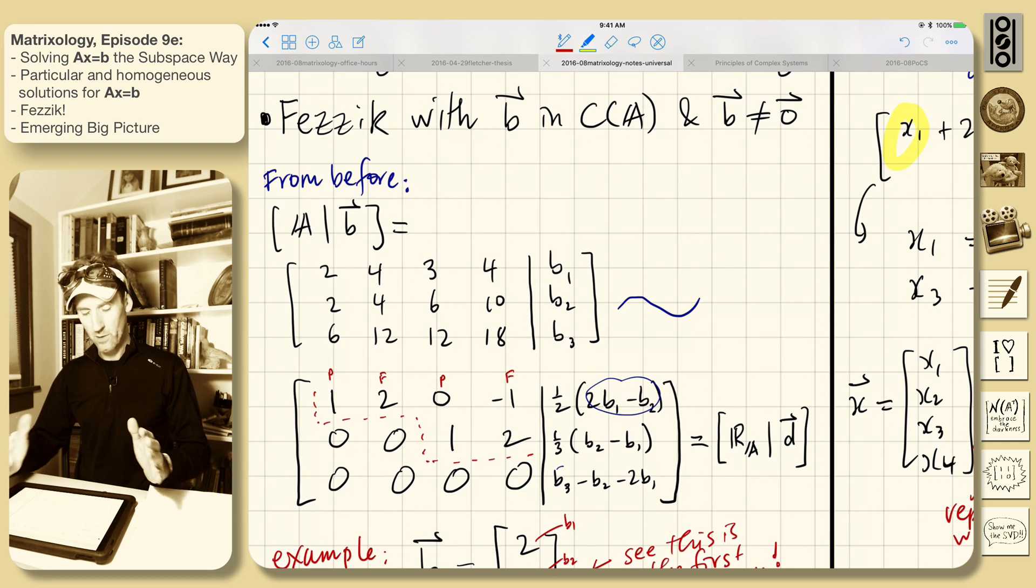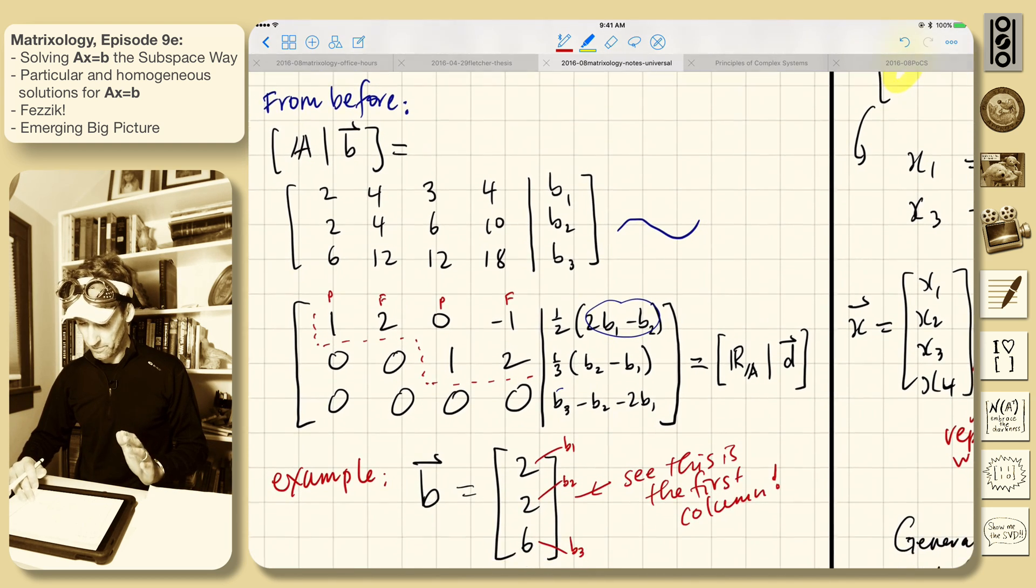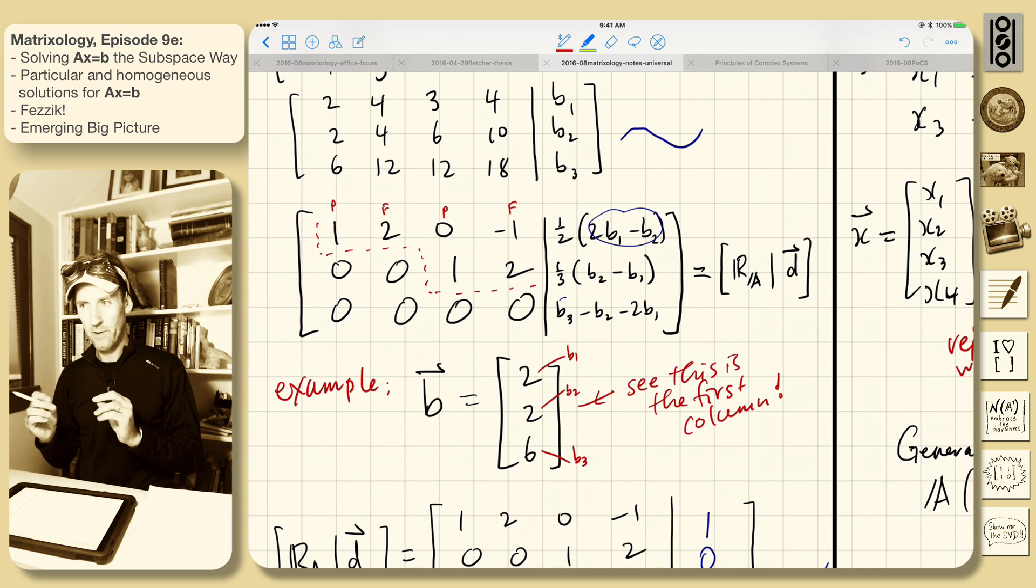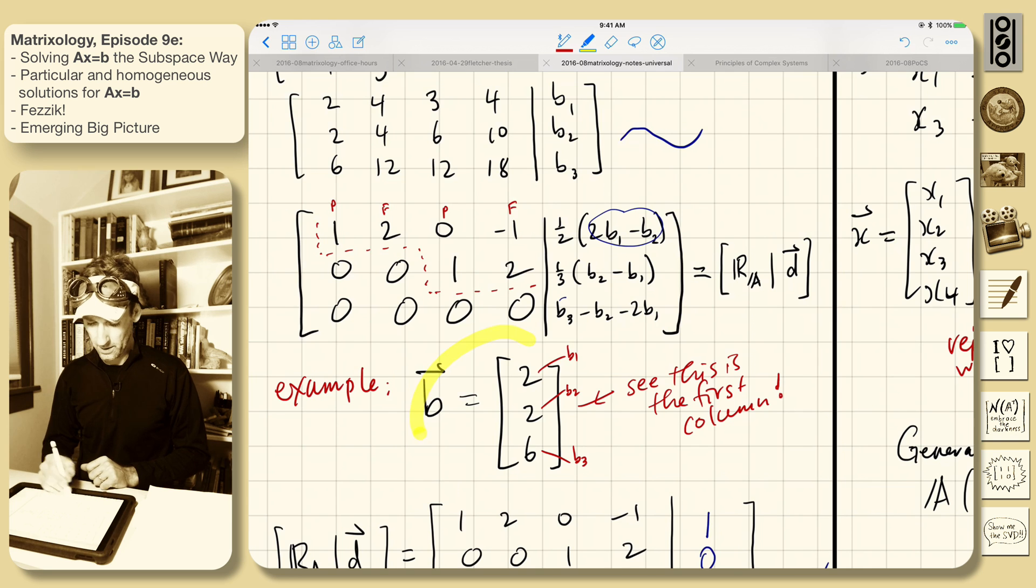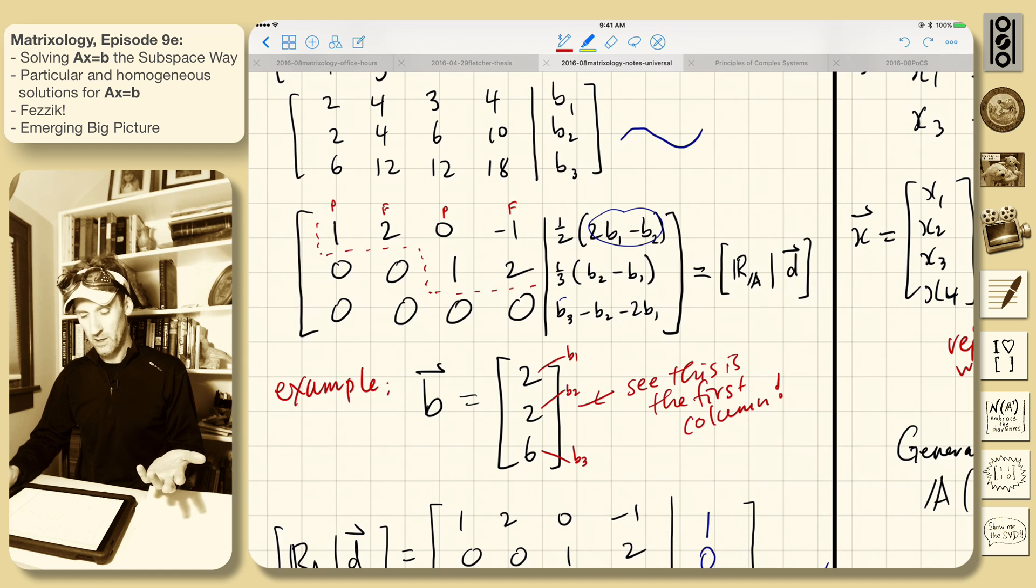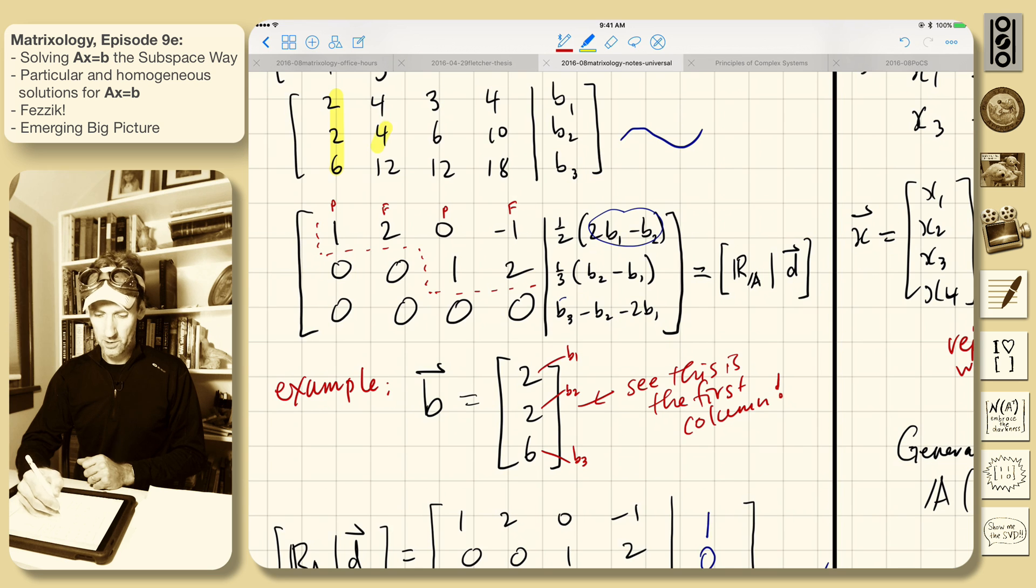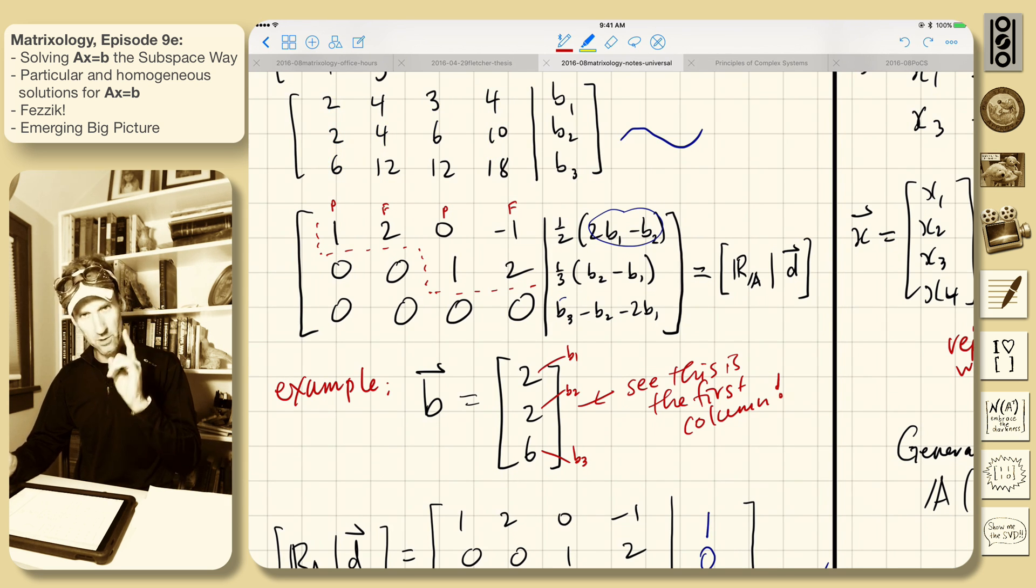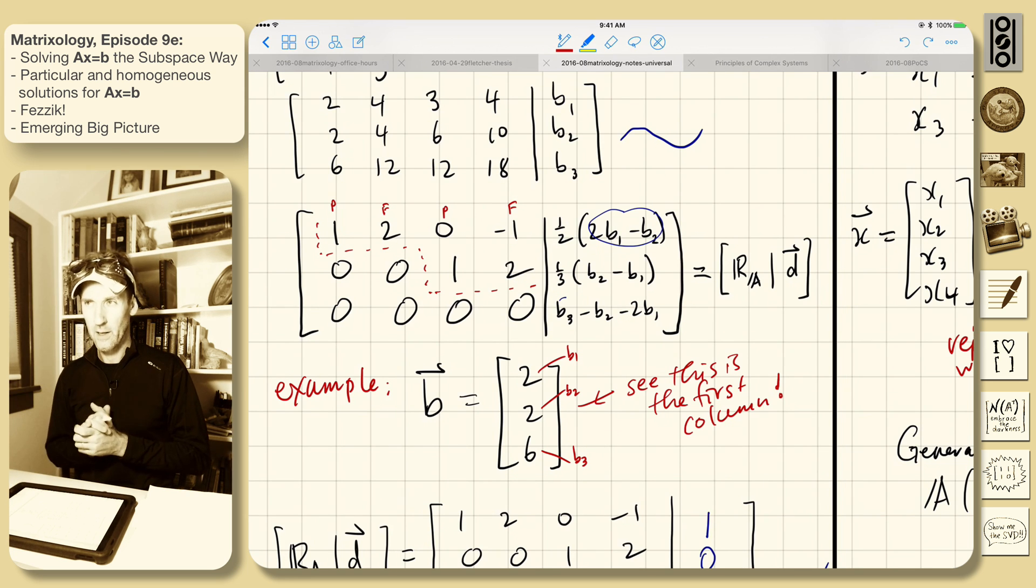Imagine we've done that. We started with a B, and someone hands you this B here - it's 2, 2, 6: B1, B2, B3. Now it is actually true that this is the first column, so it's a contrived example. We know (1, 0, 0, 0) is a solution - one of the first column, 0, 0, 0 gives us the answer A times (1, 0, 0, 0) equals this B. That doesn't mean we'll find that solution, but in this case we will.